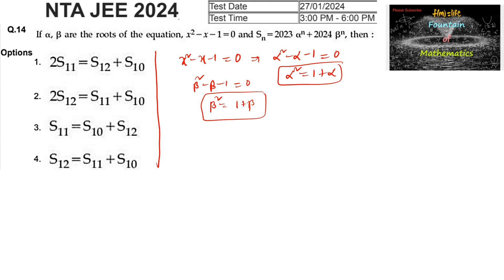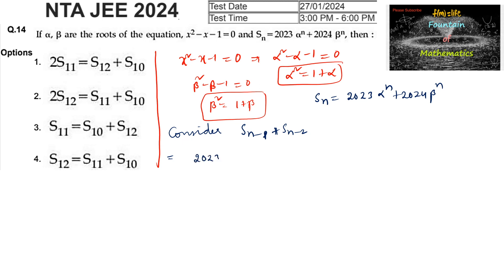Also given that Sn equals 2023 times alpha to the power n plus 2024 times beta to the power n. Let us consider S(n-1) plus S(n-2), which equals 2023 times alpha to the power of n minus 1 plus 2024 times beta to the power of n minus 1, plus S(n-2).